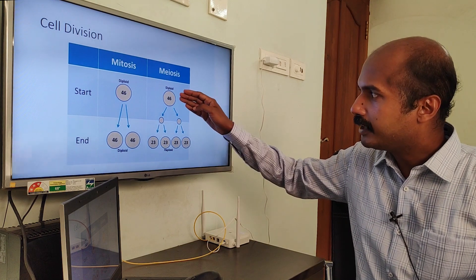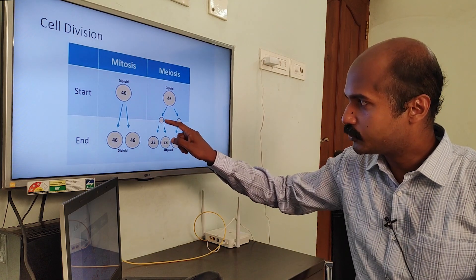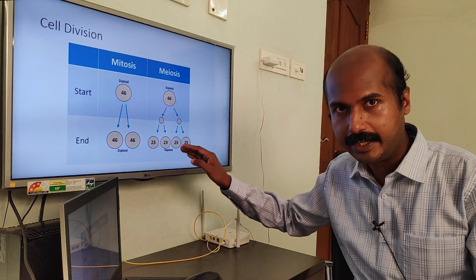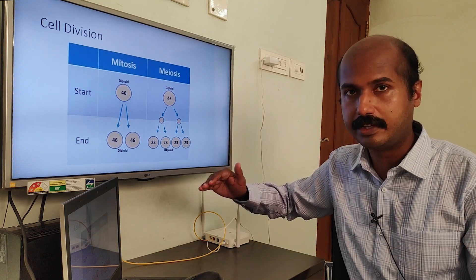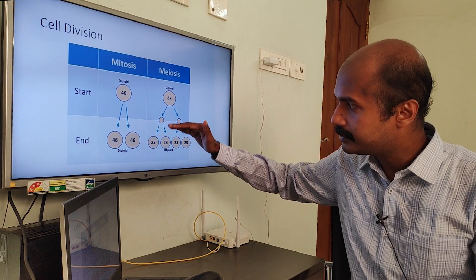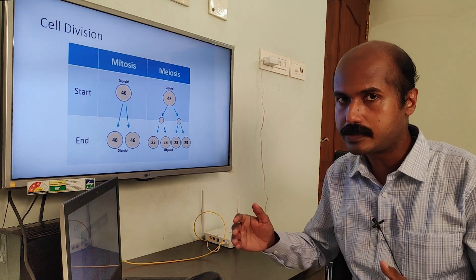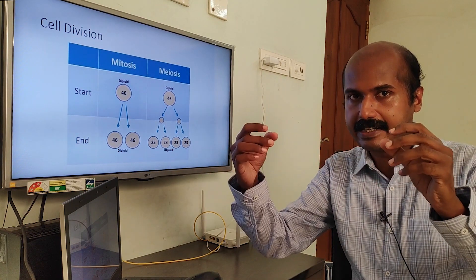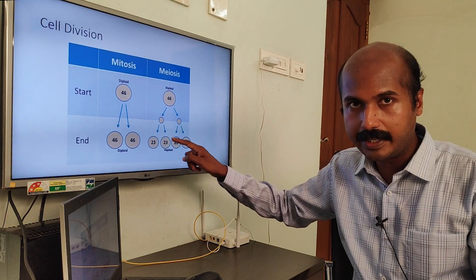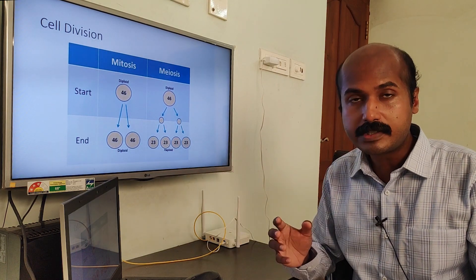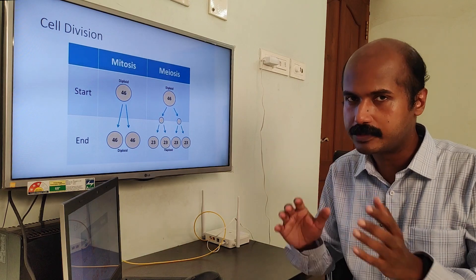In meiosis, it begins with 46 chromosomes, which are divided into two daughter cells with 23 chromosomes each. Those daughter cells are then divided again, giving four daughter cells each with 23 chromosomes. The actual reduction division occurs in meiosis I. Meiosis II is similar to mitosis — it involves the separation of dyads, i.e., the two sister chromatids separating. In meiosis I, 23 chromosomes are separated from the original 46.